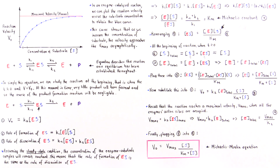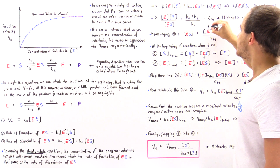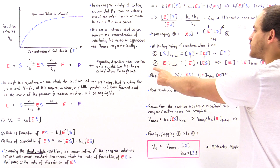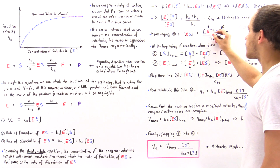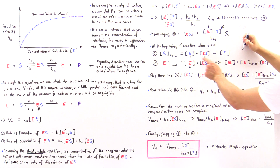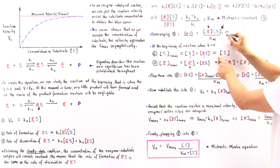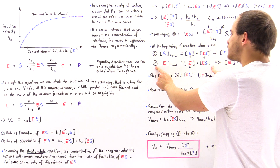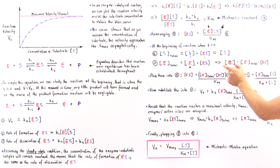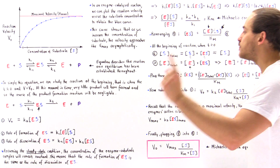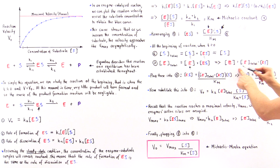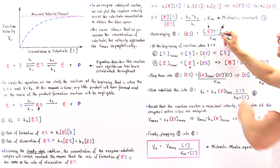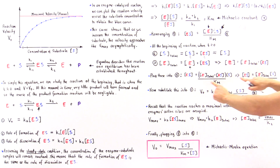Now we want to use equation seven to replace this quantity in terms of the total amount of enzyme and the enzyme-substrate concentration. We take equation seven, rearrange it, and solve for the free enzyme: the concentration of the enzyme that is not bound to anything is equal to the total enzyme concentration minus the enzyme concentration that is bound to our substrate. Now we take equation five and replace this quantity with this.